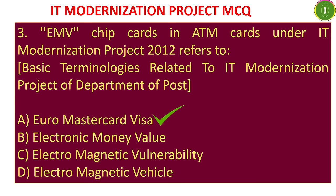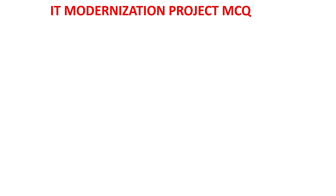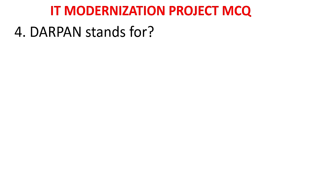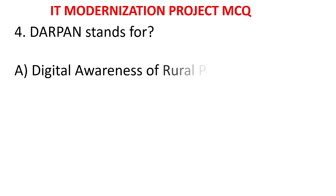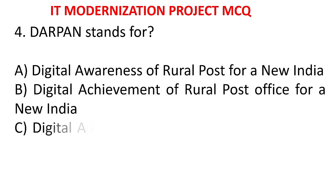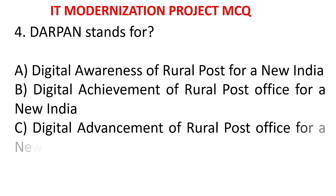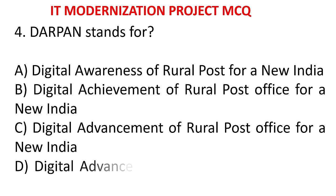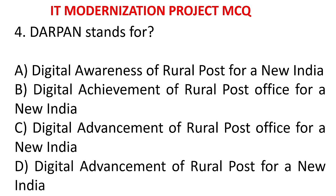MCQ 4: What does DARPAN stand for? Options: A) Digital Awareness of Rural Post Office for a New India, B) Digital Achievement of Rural Post Office for a New India, C) Digital Advancement of Rural Post Office for a New India, D) Digital Advancement of Rural Post Office for a New India. The answer is Digital Advancement of Rural Post Office for a New India.